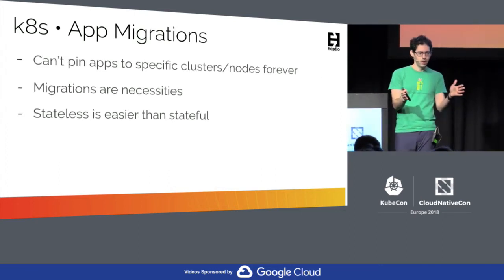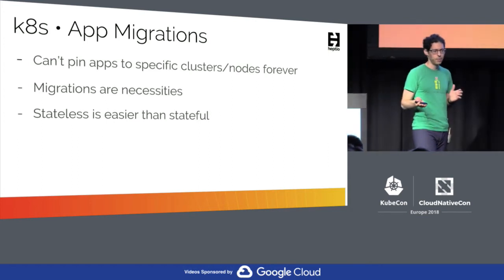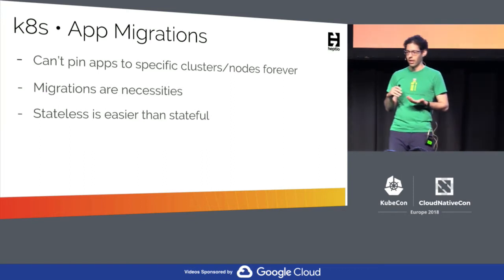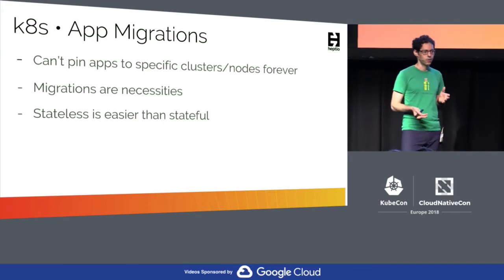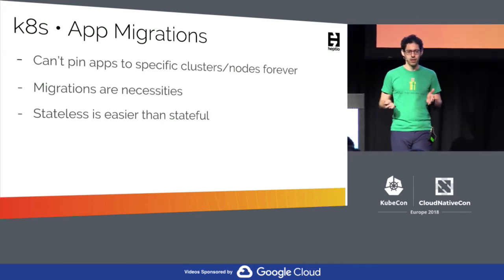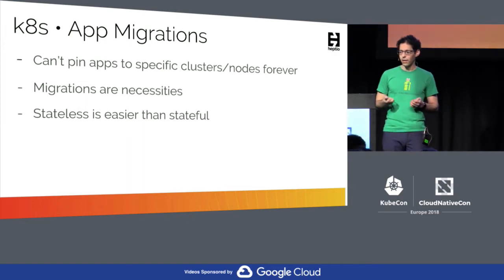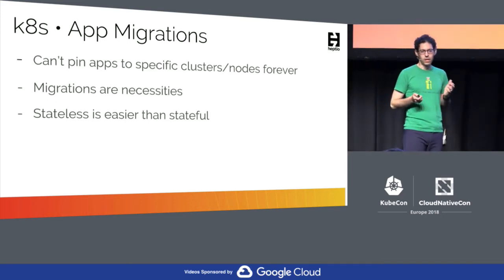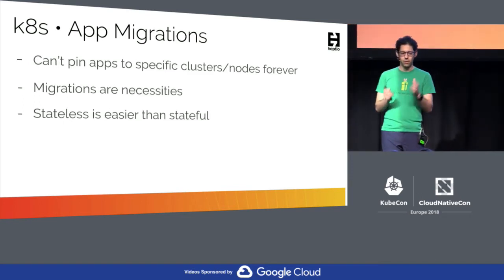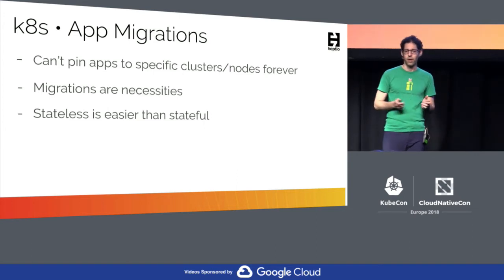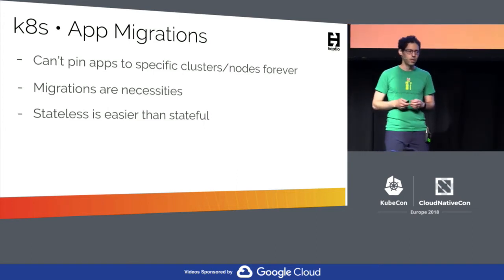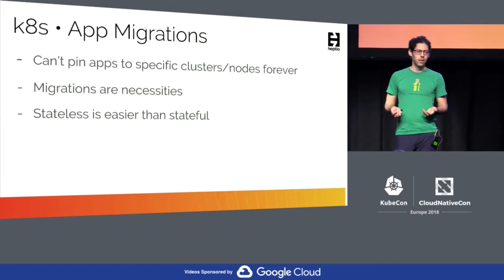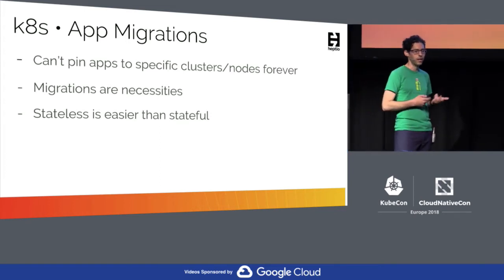So you've got your cluster installed and you've automated your installation. Let's talk about applications. Hopefully you have your application configurations — whether it's YAML or JSON or something else — in source control. That's very important. But once you have your applications automated, you may need to migrate them at some point. You can't think you're going to pin an application to a specific cluster or node forever. At some point the node is going to be decommissioned, or the pod just gets killed, or the cluster needs to be decommissioned. So we need to think that migrations are necessities and we have to accept that.